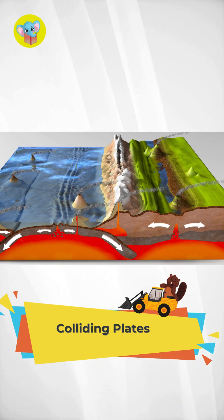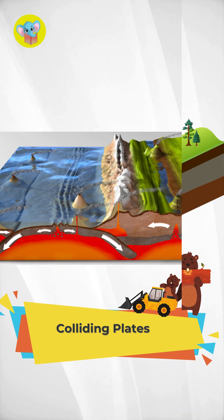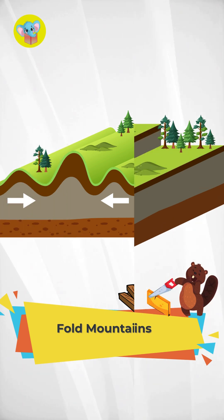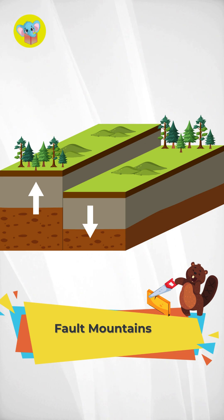These plates collide and push against each other over millions of years. The land crumples upward to create fold mountains. Sometimes, large blocks of earth break and shift to form fault mountains.